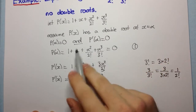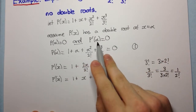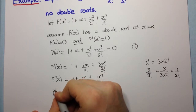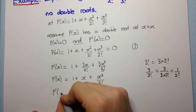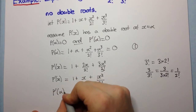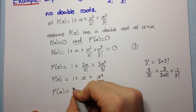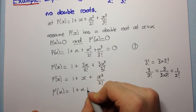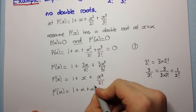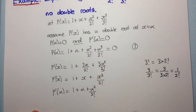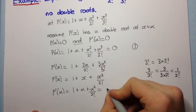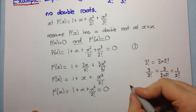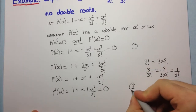Now we know that p dash alpha is equal to 0, so p dash alpha equals 1 plus alpha plus alpha squared over 2 factorial, and that's equal to 0. Let's call that equation 2.